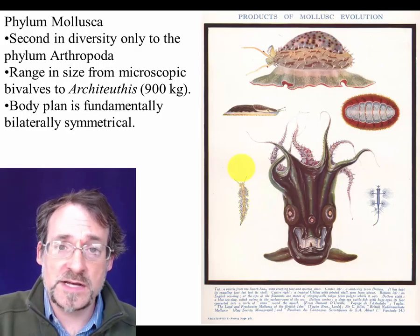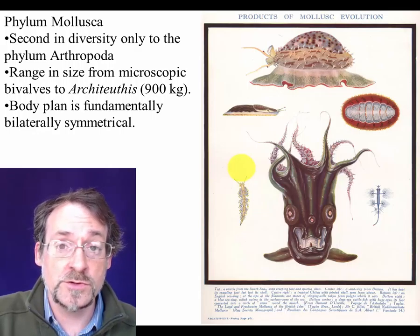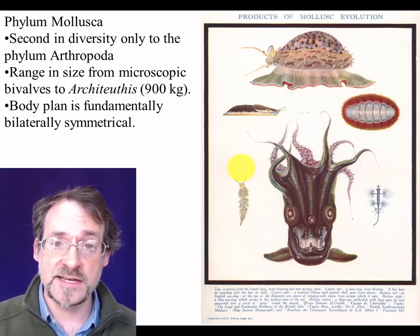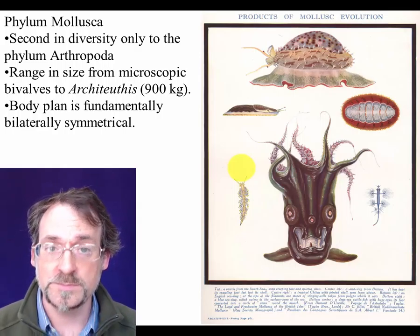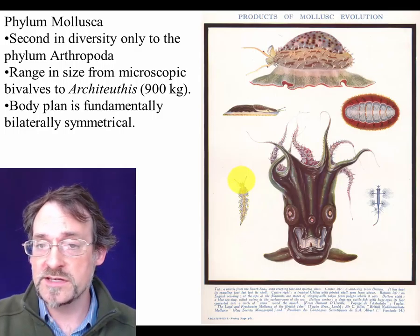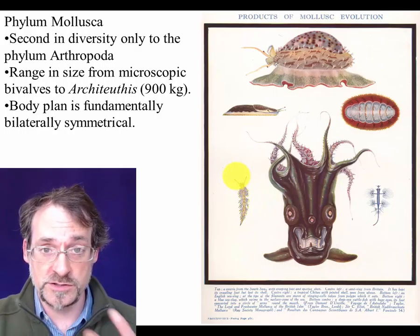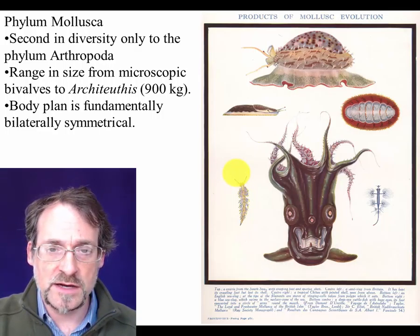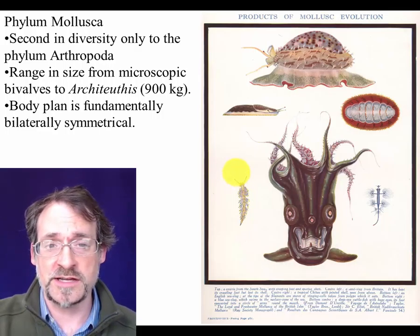Fundamentally, the body plan of a mollusk is bilaterally symmetrical, though if you look at organisms like snails you'll realize that secondarily it has become asymmetrical. However, most of the structures within even these gastropods — snails with asymmetrically coiled shells — most of the features are still bilaterally symmetrical and paired.